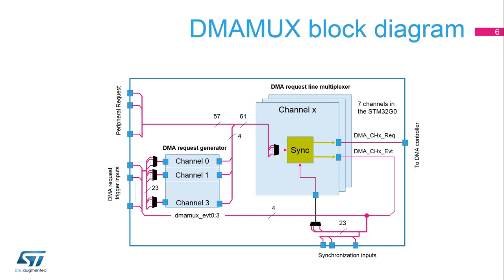The DMA-MUX request multiplexer enables routing a DMA request line between the STM32-G0's peripherals and the DMA controller. The routing function is ensured by a programmable multi-channel DMA request line multiplexer. Each channel selects a unique DMA request line, unconditionally or synchronously with events, from its DMA-MUX synchronization inputs. The DMA-MUX may also be used as a DMA request generator from programmable events on its input trigger signals. The DMA request line multiplexer generates both a request to the DMA controller and also events that can be used as synchronization inputs as well as trigger inputs.